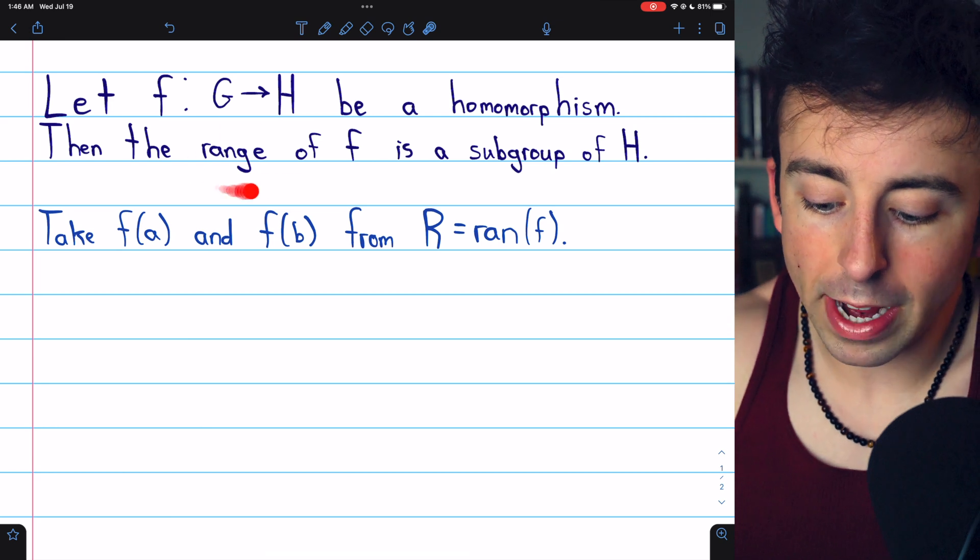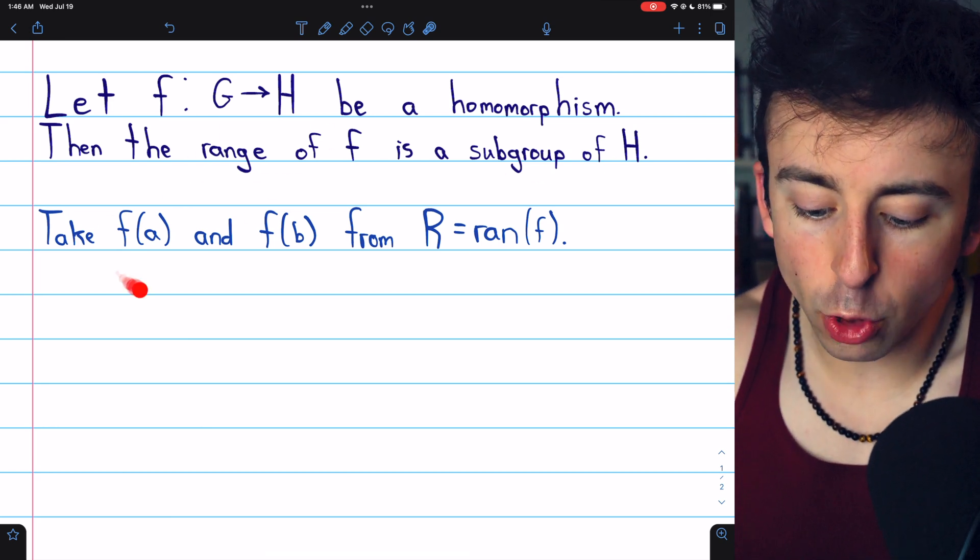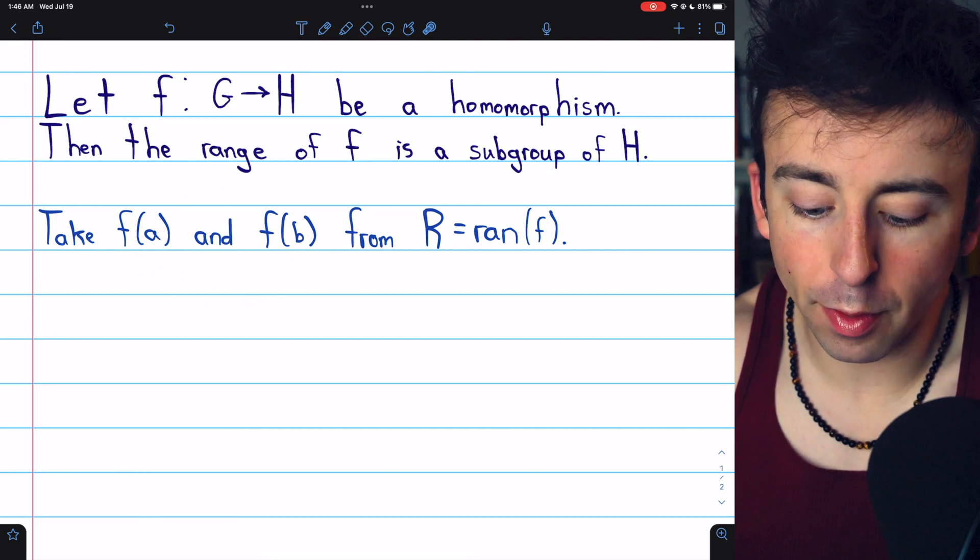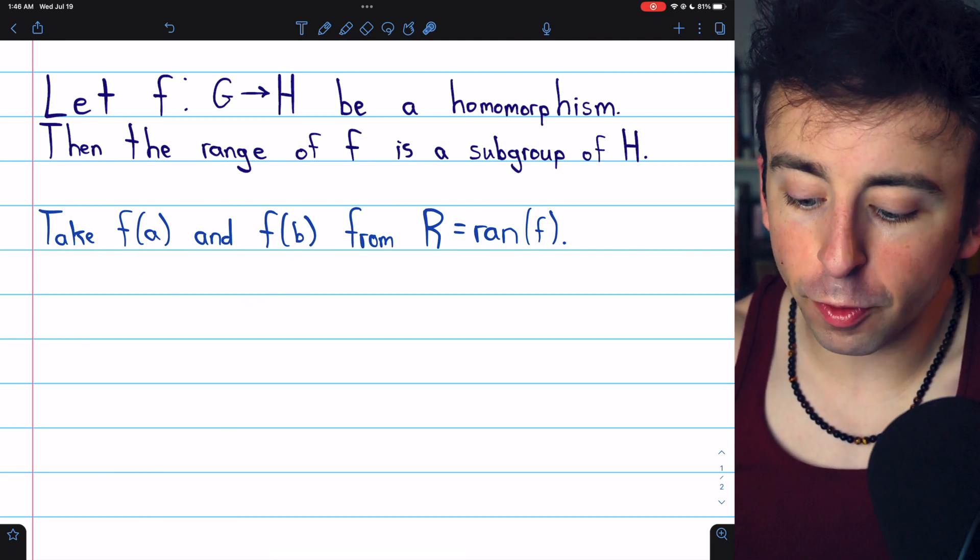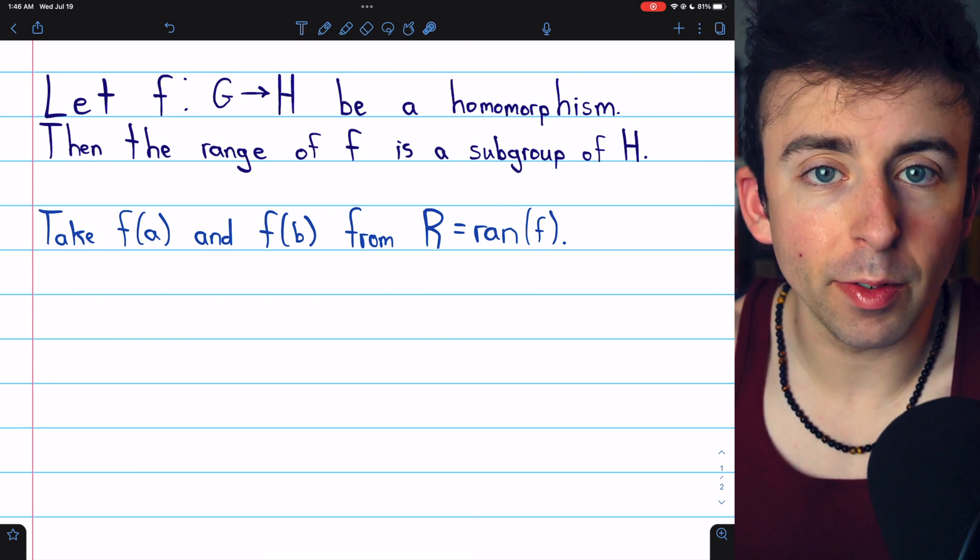To prove this result that the range of F is a subgroup of H, we'll take two arbitrary elements F of A and F of B from the range of F. Let's just call the range of F R for convenience.